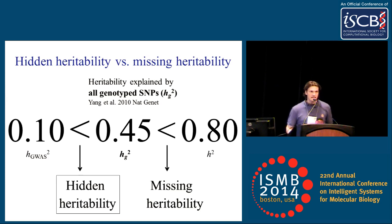On the other hand, the gap between 0.1 and 0.45, or now 0.16 to 0.45 as Joel mentioned, is heritability that's hiding somewhere on the genotyping chip or at least tagged by the genotyping chip. We know it's there; we just don't know exactly where it is. I'm going to refer to that as hidden heritability.